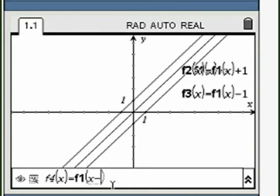Define function F4 in terms of F1 so that it results in a horizontal shift.